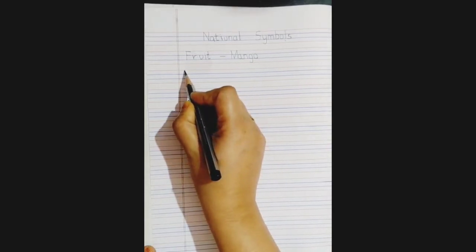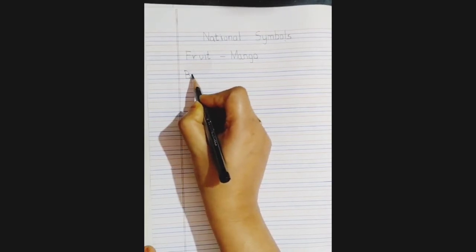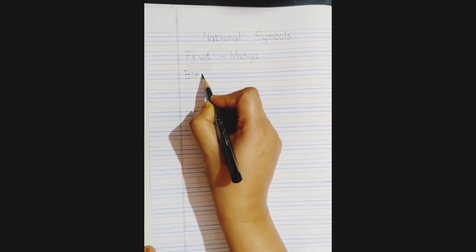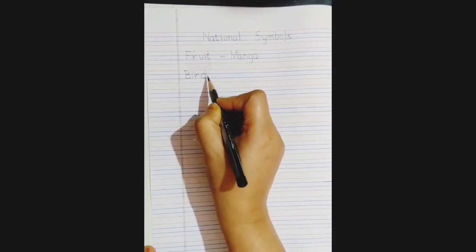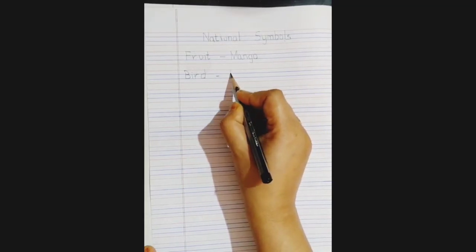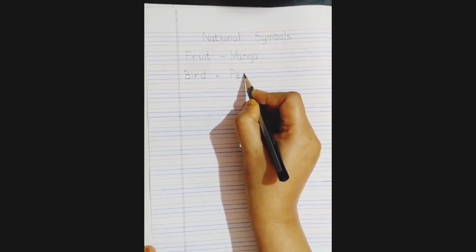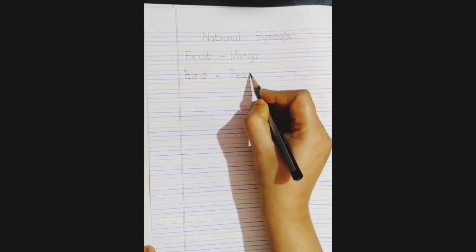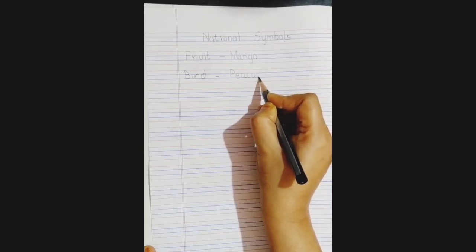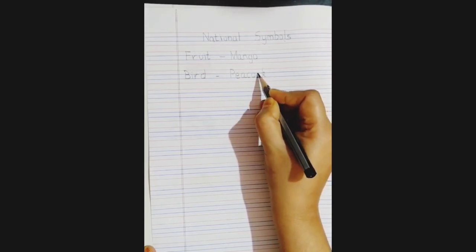National bird. So we write a big B, I, R and D. Yes, give a small dash. Which is the national bird? Peacock. So we will write peacock. A P, E, A, all between the blue lines, C, O, C and K. Peacock.